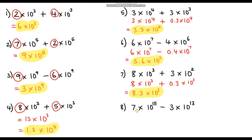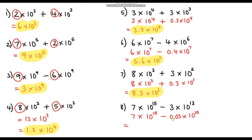Question 8: 7 times 10 to the power 15 minus 3 times 10 to the power 13. Keep the larger power: 7 times 10¹⁵. To match powers, we go from 10¹³ to 10¹⁵ by multiplying by 10 twice, so we divide the base by 10 twice: 3 ÷ 10 = 0.3, ÷ 10 again = 0.03. So 0.03 times 10 to the power 15. Subtracting base numbers: 7 minus 0.03 is 6.97. Answer: 6.97 times 10 to the power 15.